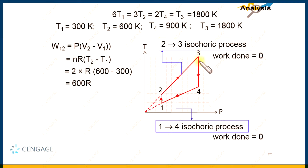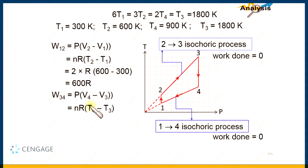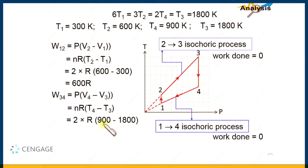Now let us move to process 3 to 4. It is again an isobaric process. We can write W₃₄ = P(V₄ - V₃) = nR(T₄ - T₃). Substituting n = 2, T₄ = 900 K, and T₃ = 1800 K: W₃₄ = 2 × R × (900 - 1800) = 2R × (-900) = -1800R. So the work done in process 3 to 4 is equal to -1800R.